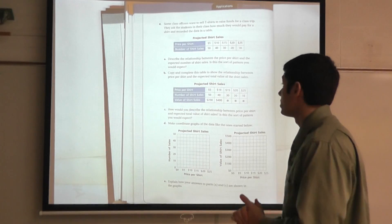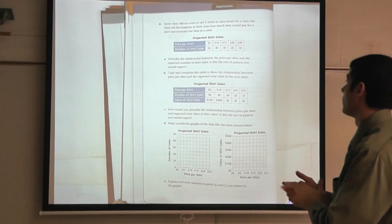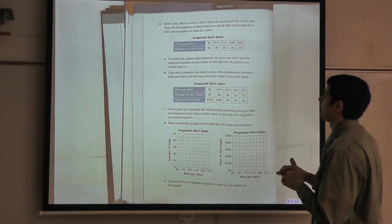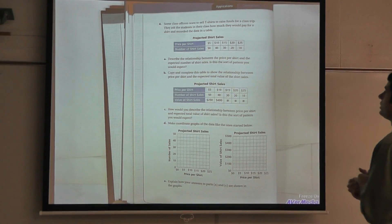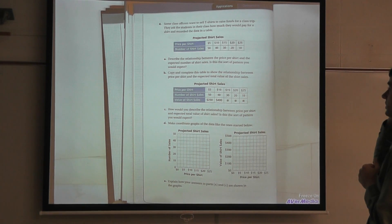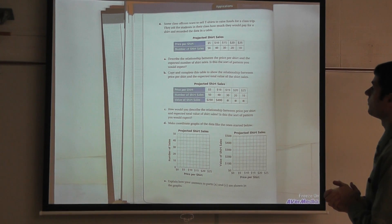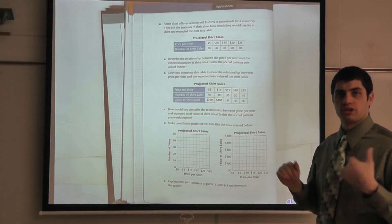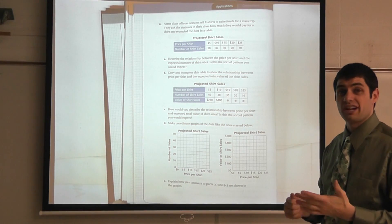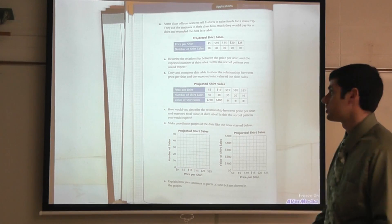We're going to take a look at Problem 4. Problem 4 states: some class officers want to sell t-shirts to raise funds for a class trip. They asked the students in their class how much they would pay for a shirt and recorded the data in a table. So they're going to ask their classmates how much would you be willing to pay for a class shirt.